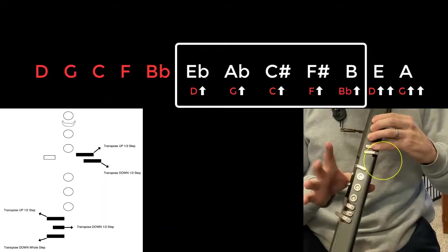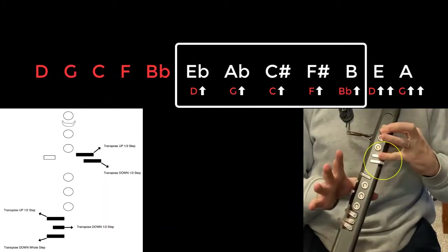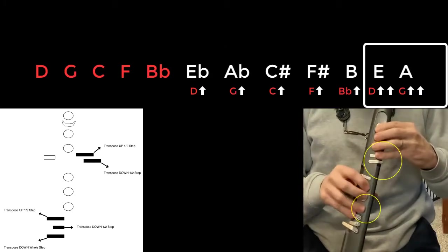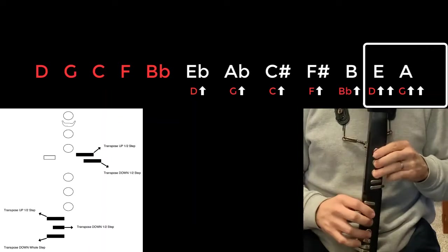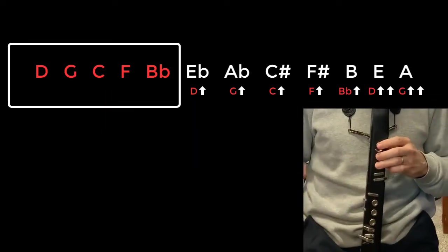So it's like E-flat, A-flat, C-sharp, F-sharp, B. If you add your last pinky, that'll give you an E scale and an A scale. I'm going to demonstrate this and you should practice this a couple times. I'll just play the scales up and down.